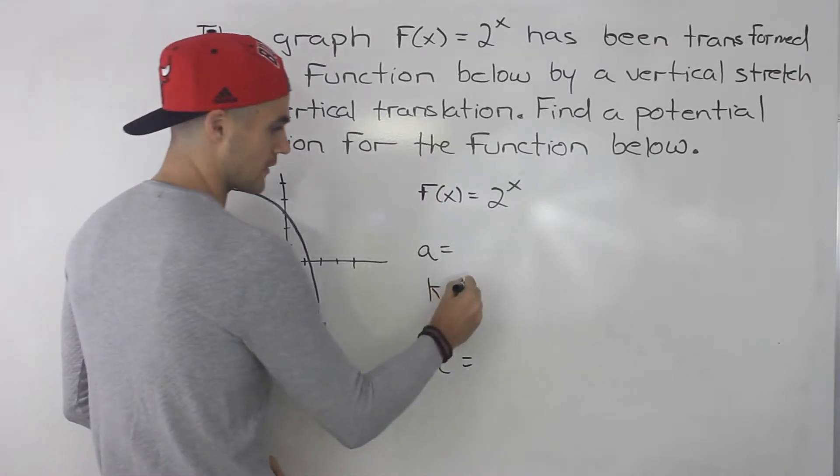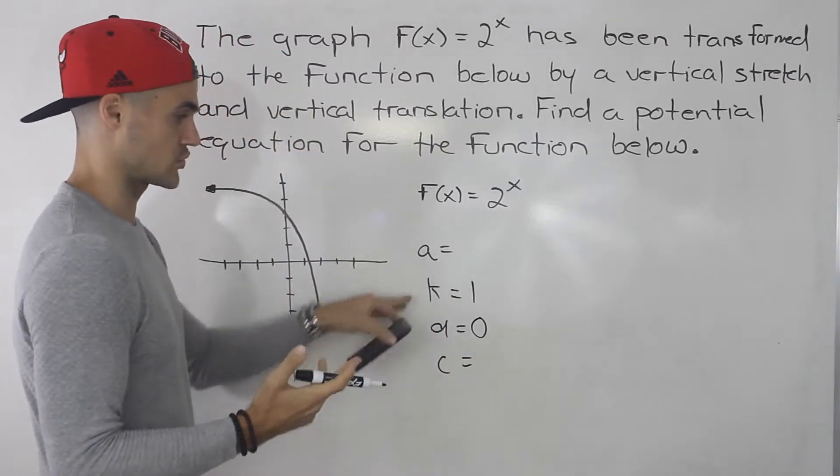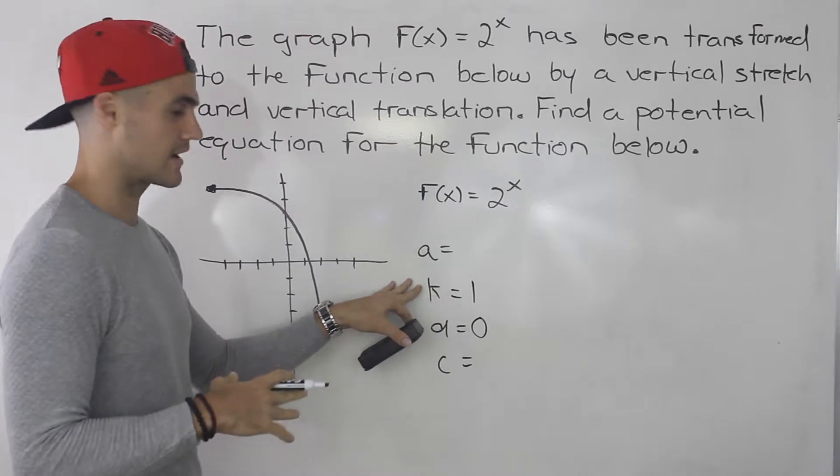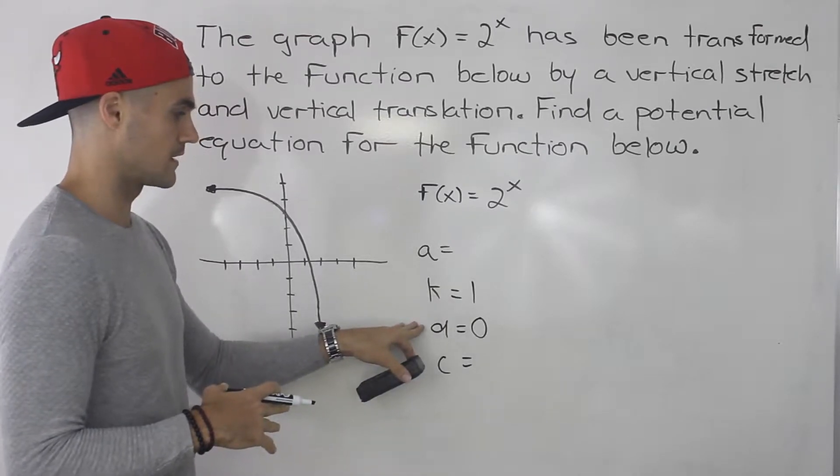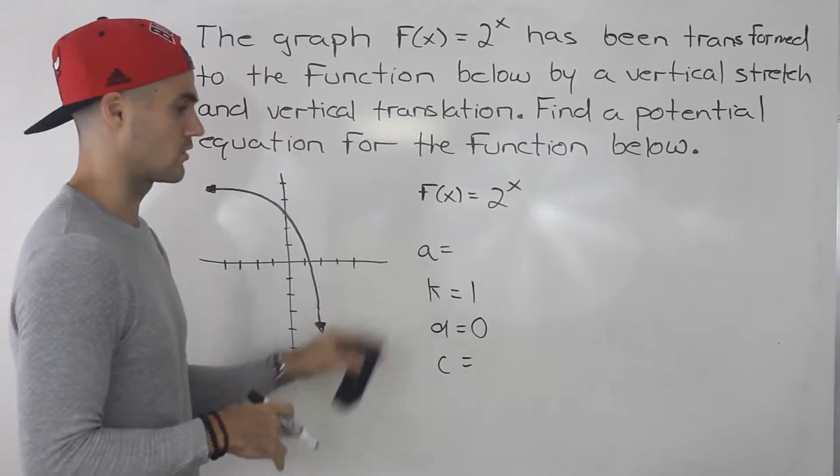So we know the k value is 1, d value is 0, because we're not told of any horizontal stretch or compression or any reflection in the y-axis, and we're not told of any translation left or right.